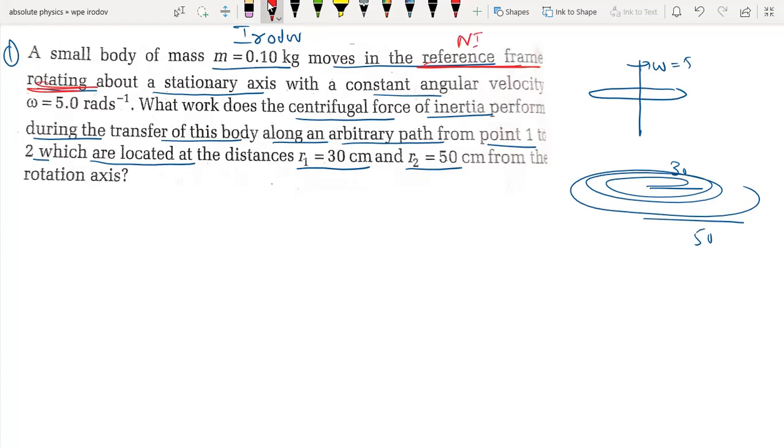The centrifugal force is equal to m omega square r and r changes. So we can find work done which is equal to F dr for variable force.